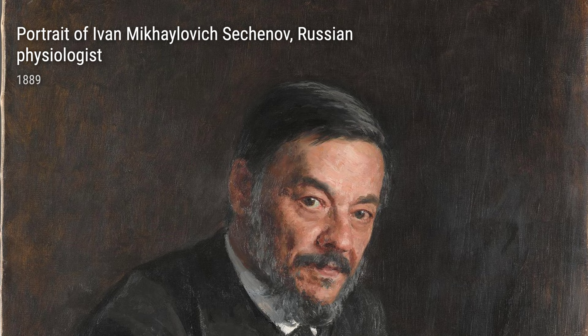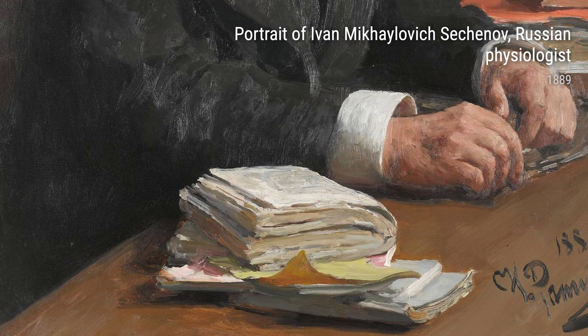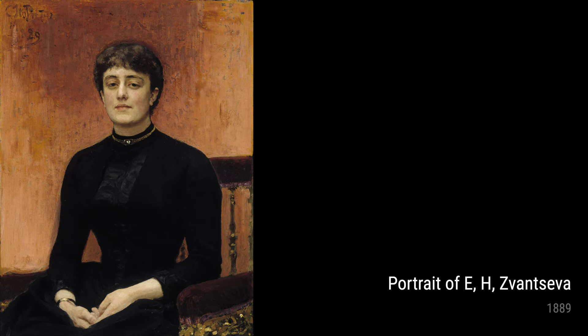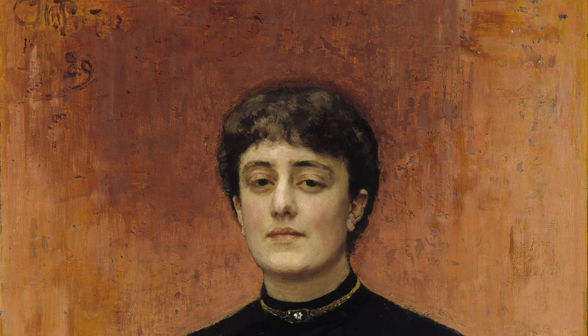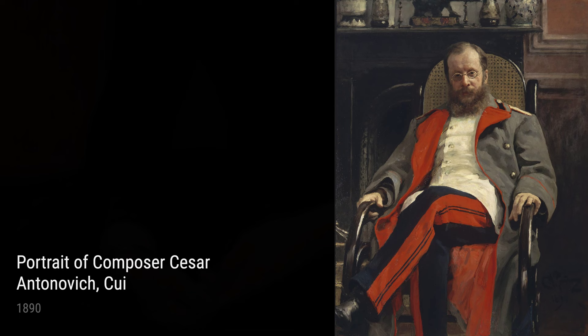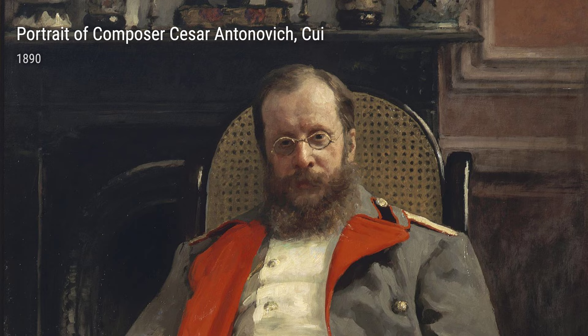Repin's social consciousness is evident in his portraits as well. "Portrait of Ivan Mikhailovich Sechenov," painted in 1889, celebrates the achievements of the Russian physiologist and highlights Repin's admiration for intellectuals and pioneers in their respective fields. In "Portrait of E. H. Zvanceva," painted in the same year, Repin showcases the beauty and individuality of his subject, giving us a glimpse into the rich tapestry of Russian society.